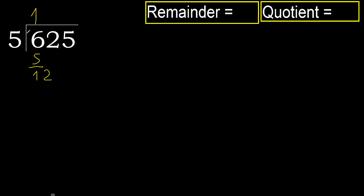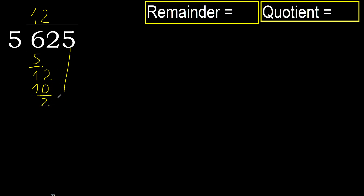5 multiplied by 3 is greater. Multiplied by 2 is 10, which is not greater. Subtract. Next.